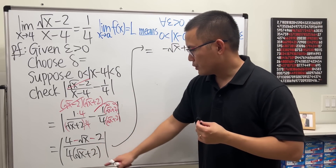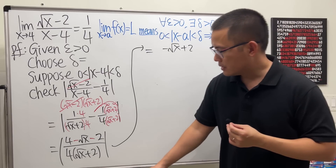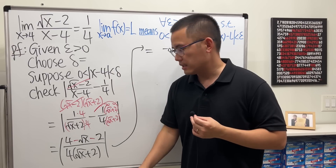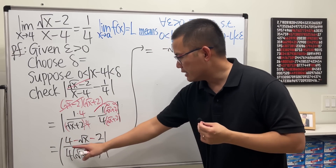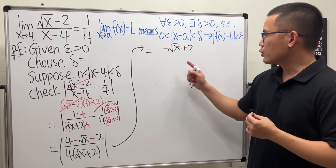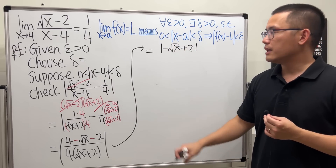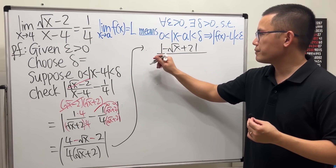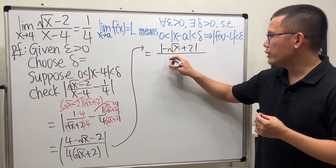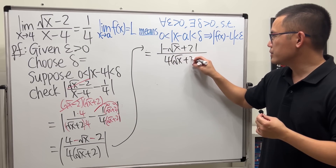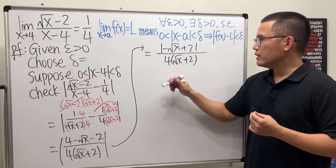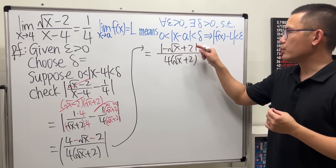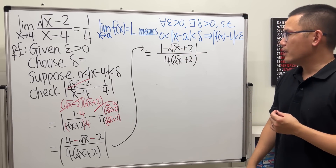For the bottom, since the absolute value of a quotient equals the quotient of absolute values, we put the absolute value on the numerator and divide by the absolute value of the denominator. However, 4(√x + 2) is never negative, so the absolute value on the denominator doesn't change anything — we just leave it. Now we have the absolute value of (−√x + 2) divided by 4(√x + 2), and we consider two approaches.